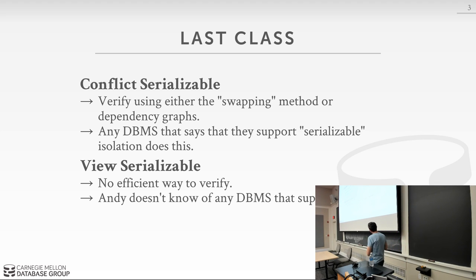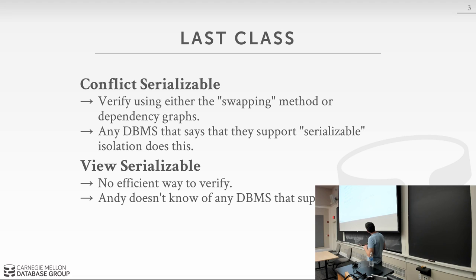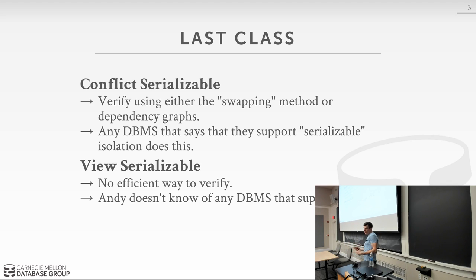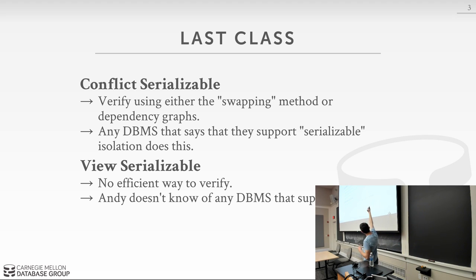Last class, we spent most of our time talking about the isolation guarantees of transactions as described by the ACID moniker. The two key things I want to reiterate: when we had the discussion about what it means for a schedule to be serializable, there was a distinction between conflict serializable and view serializable. That discussion was not about how to actually generate schedules — it was about whether a given static schedule is serializable or not. Conflict serializability can be verified by swapping operations or checking the dependency graph for cycles.